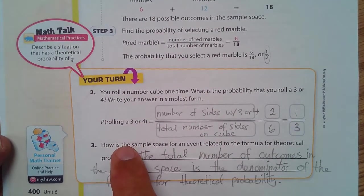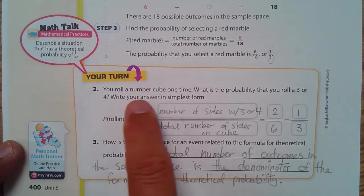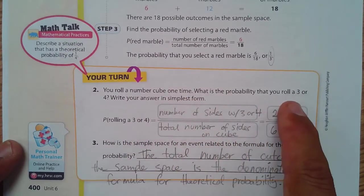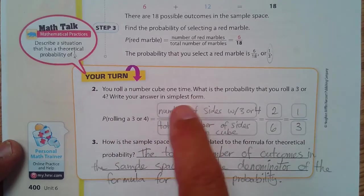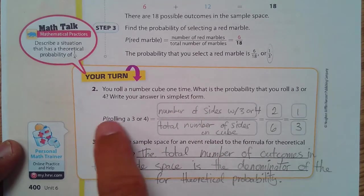Next. Your turn question. You roll the number cube one time. What is the probability that you roll a 3 or 4? Write your answer in simplest form.